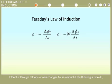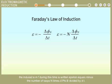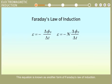If the flux through N loops of wire changes by an amount d phi B during a time dt, the induced EMF during this time is written epsilon equals minus the number of loops N times d phi B divided by dt. This equation is known as another form of Faraday's law of induction.